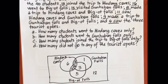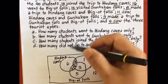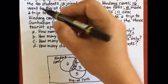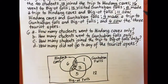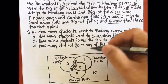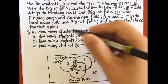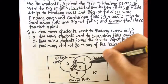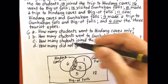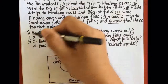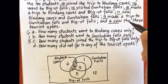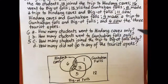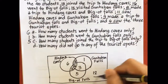Now answering the questions: how many students went to Hindang Caves only? The answer is 6. Went to Gunhuban Falls only — the answer is 1. Joined the trip to Bigot Falls only — the answer is 5. And did not go to any of the tourist spots — the answer is 12.